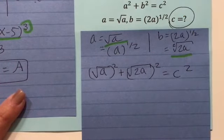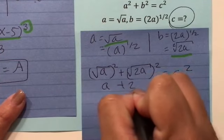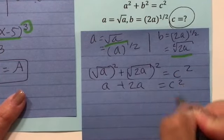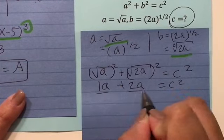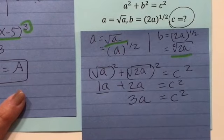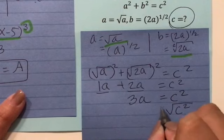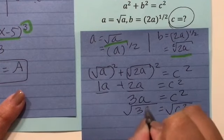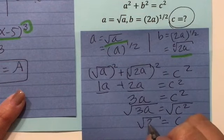So this is going to become a plus 2a equals c squared. So that's 1a plus 2a equals 3a equal to c squared. I'm going to square root both sides so I can get c. So you're going to say c equals the square root of 3a. And that's my solution.